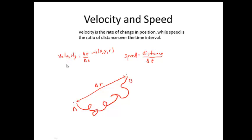In terms of signs, velocity can be positive or negative, while speed is always positive, because this is an absolute value of distance.